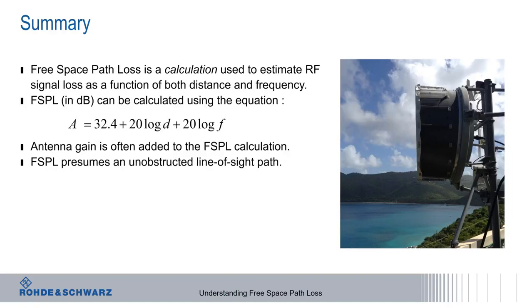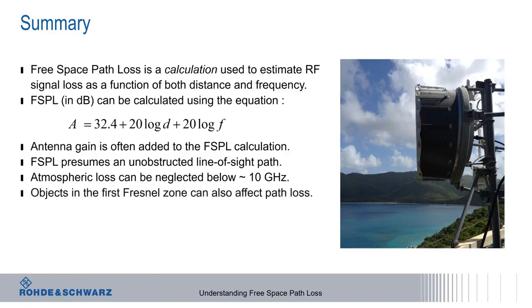Free space path loss calculations presume an unobstructed line of sight, and atmospheric loss can usually be neglected below about 10 gigahertz. On the other hand, objects in the first Fresnel zone can create additional path loss, and the size of the first Fresnel zone depends on both the distance between the antennas as well as the signal frequency. This concludes our presentation on understanding free space path loss. Thanks for watching.